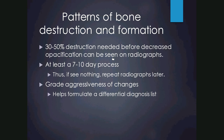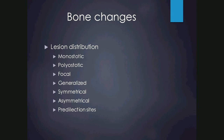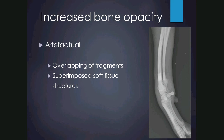Descriptors that help lead to a differential diagnosis include: monostotic — one bone affected; polyostotic — multiple bones affected. A lesion can be focal or generalised, symmetrical or asymmetrical, and certain neoplasias have predilection sites. Increased bone opacity may be artifactual, sometimes due to overlapping fracture fragments that appear more radiopaque than the surrounding bone. Any excessive soft tissue superimposed over bone will also cause that area to appear more radiopaque.